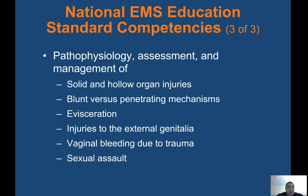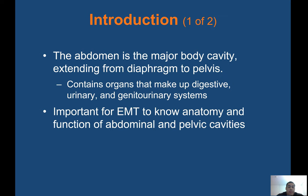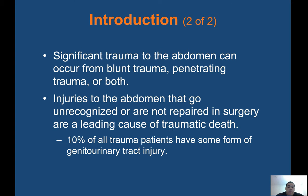We'll cover pathophysiology and assessment management of solid and hollow organ injuries, blunt versus penetrating mechanisms, evisceration, injuries to the external genitalia, vaginal bleeding due to trauma, and sexual assault. The abdomen is the major body cavity extending from the diaphragm to the pelvis, containing organs that make up the digestive, urinary, and genitourinary systems. It's important for the EMT to know the anatomy and function of abdominal and pelvic cavities. Significant trauma can occur from blunt trauma, penetrating trauma, or both. Injuries to the abdomen that go unrecognized or not repaired in surgery are a leading cause of traumatic death. Ten percent of all trauma patients have some form of genitourinary tract injury.